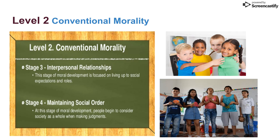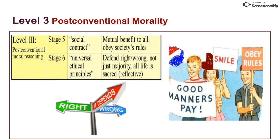Level two is conventional morality and contains two stages. Stage three is interpersonal relationships — this stage is focused on living up to social expectations and goals. For example, a teenager might say, 'I will buy this dress so all my friends will like me.' We do something because we want to be liked by others. Stage four is maintaining social order — people try to follow the rules, and at this stage they begin to consider society as a whole when making judgments.